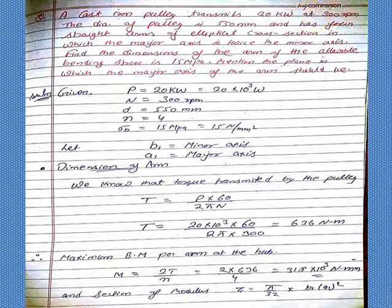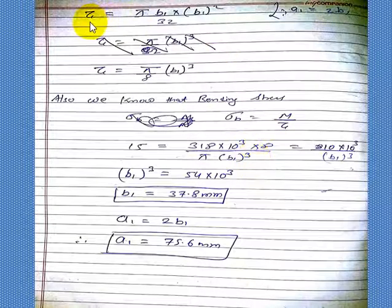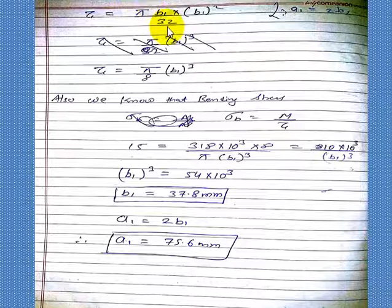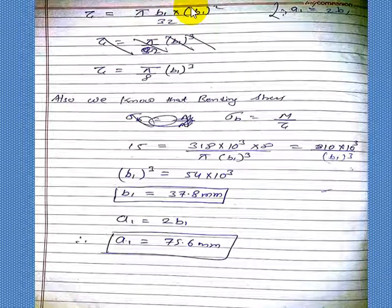Now Z, the section of modulus, is equal to pi by 32, b1 into a1 square. And our question has said that your major axis is twice of minor axis. So a1 is equal to twice of b1. So a1 we have put 2 b1.